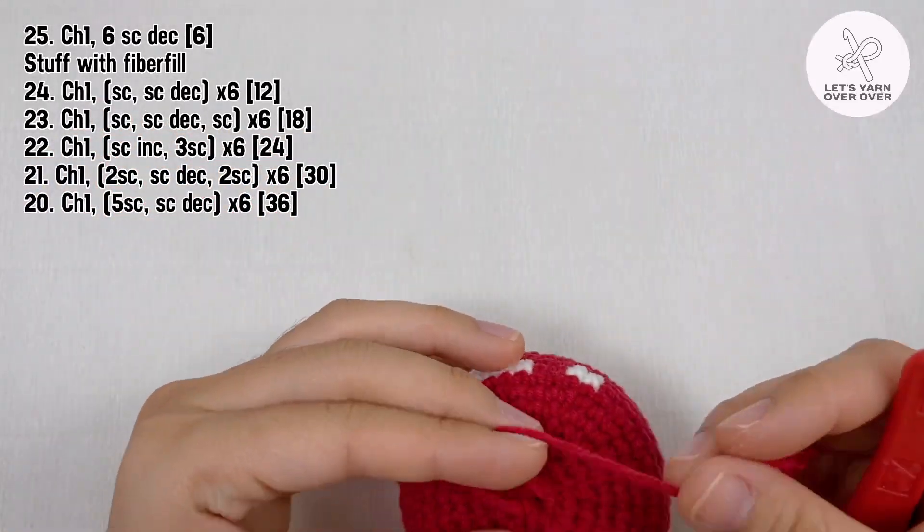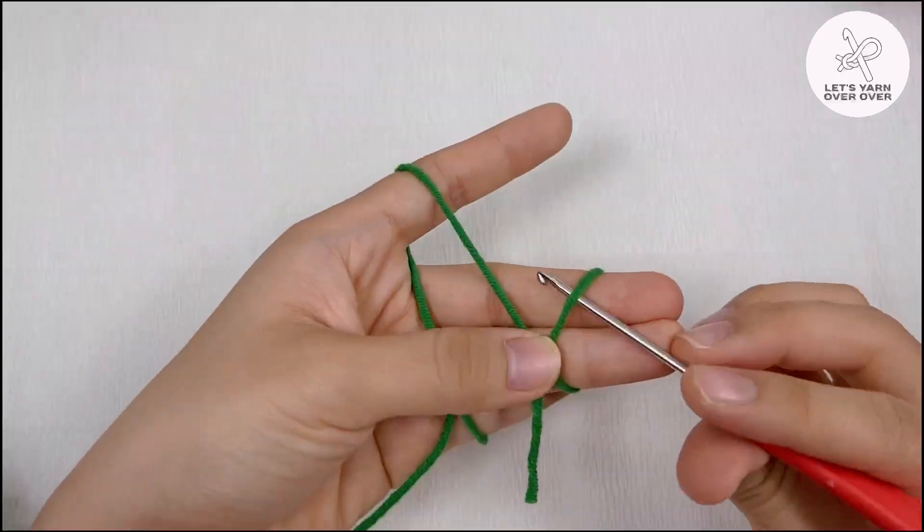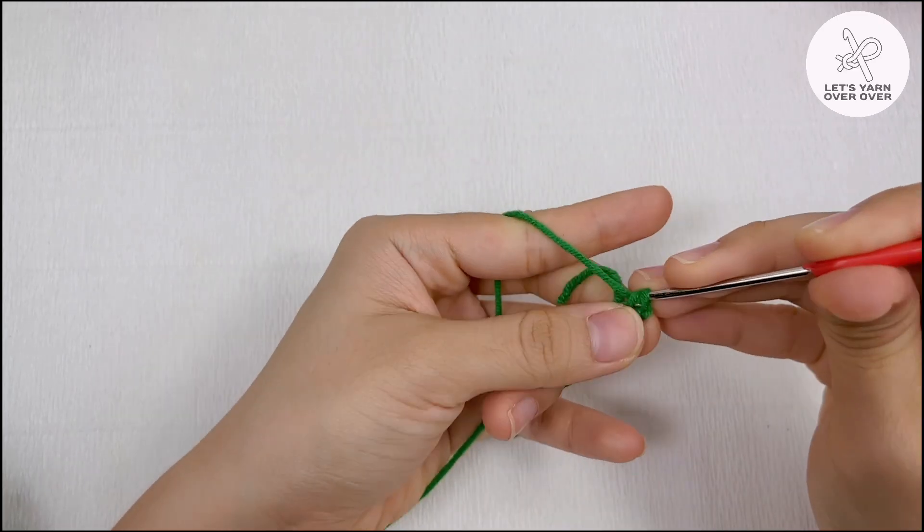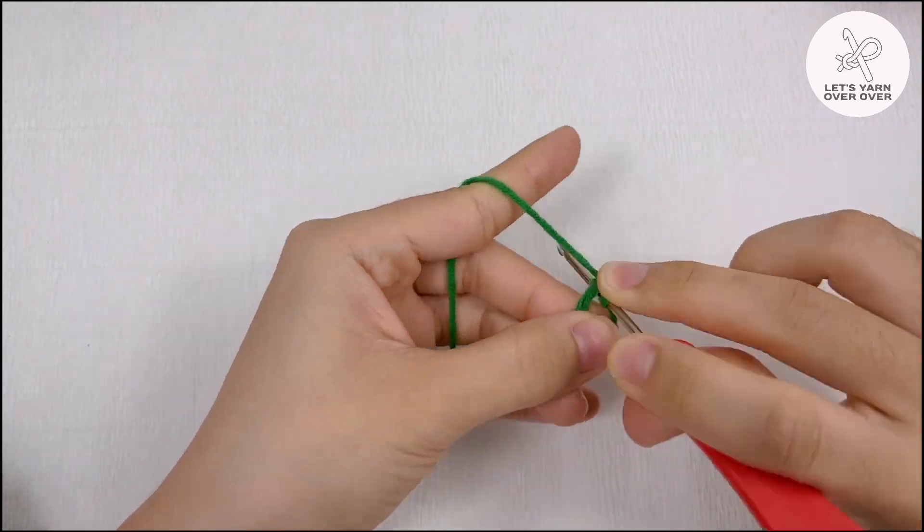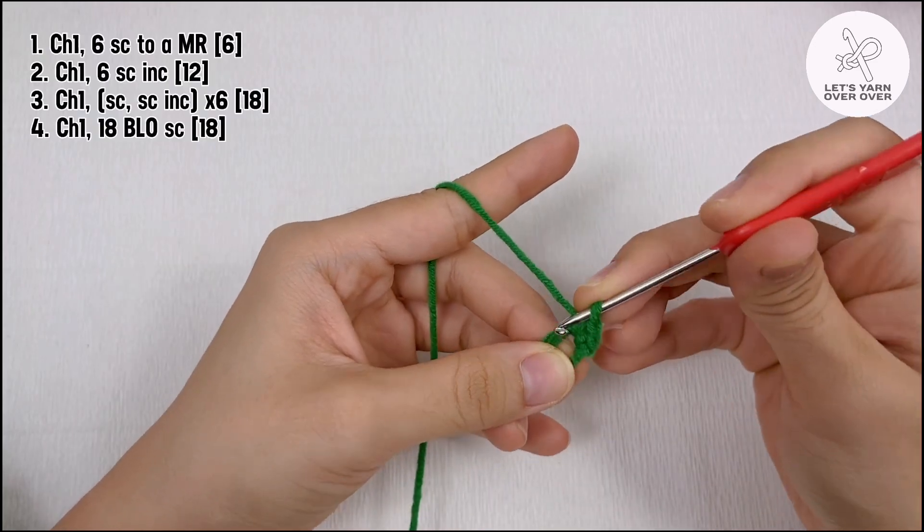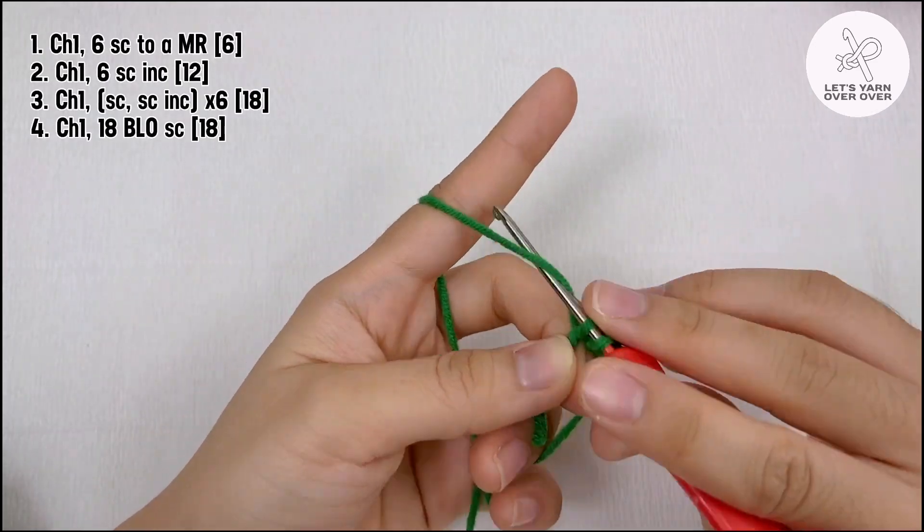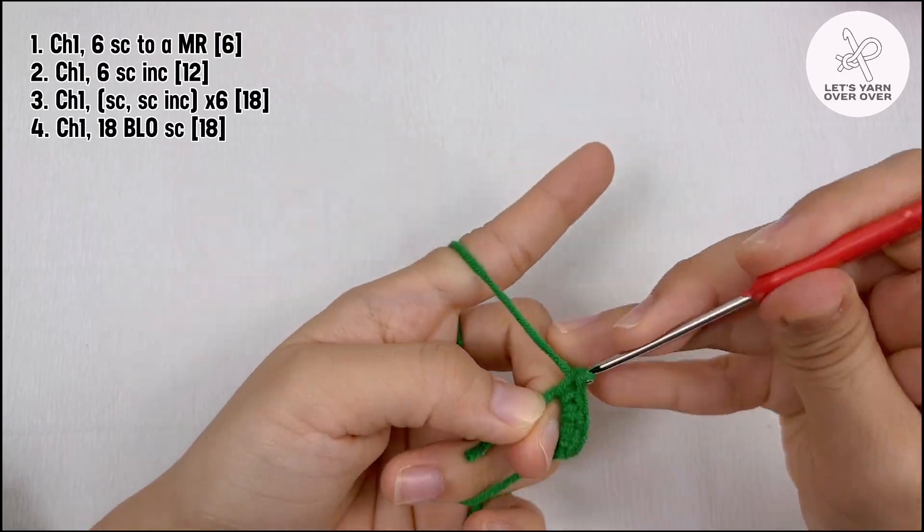To make the top of the ornament, get some green yarn and work 6 single crochet to a magic ring. Increase 6 stitches in each of the next 2 rows so you will have 18 stitches at the end of round 3, then work single crochet in every stitch in row 4.